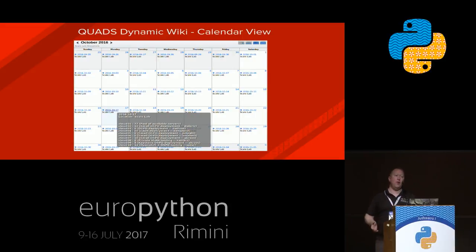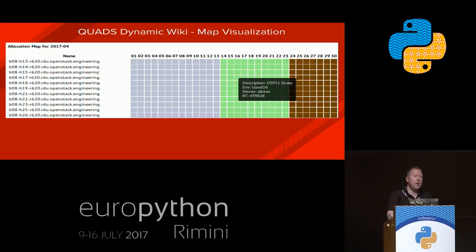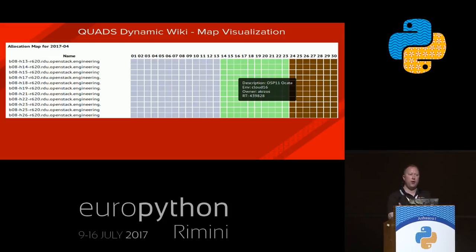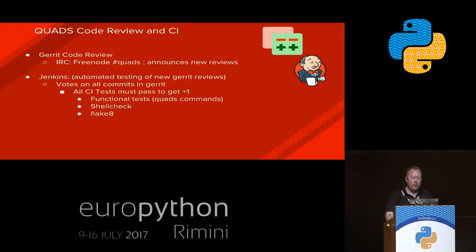On top of the documentation we have visualizations. We generate a calendar so at any point you can see what tests are running inside the R&D scale environment. We also have a heat map visualization — it looks like the old Windows 95 defrag program with the big blue grid and changing colors, but it's incredibly useful from a scheduling perspective. Generated three to six months in advance, we can quickly see what's available on any given day, then use that to schedule free servers for people.